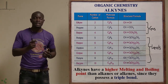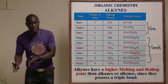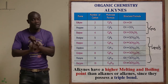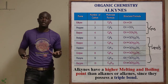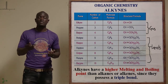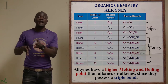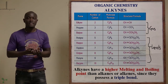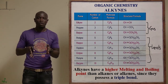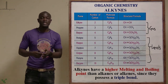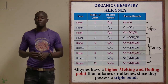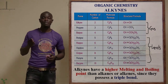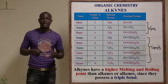Alkynes have a very high melting point and boiling point compared to alkenes and alkanes. The reason is that alkynes have a triple bond, which requires a lot of energy to break compared to a double bond or single bond. So in terms of melting and boiling points, alkynes rank highest, followed by alkenes, then alkanes.